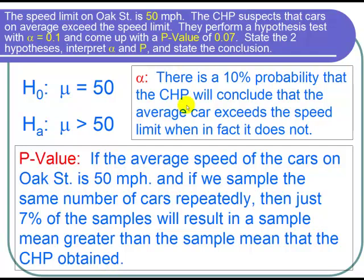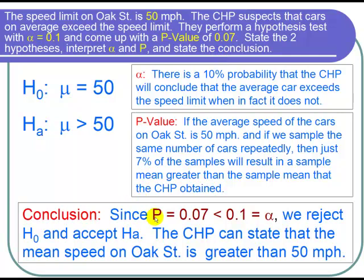Finally let's state our conclusion. The important thing is that our p-value, which is 0.07, is less than 0.1, or p is less than alpha. And when p is less than alpha, we reject the null hypothesis and accept the alternative hypothesis. So the CHP can state that the mean speed on Oak Street is greater than 50 miles per hour.